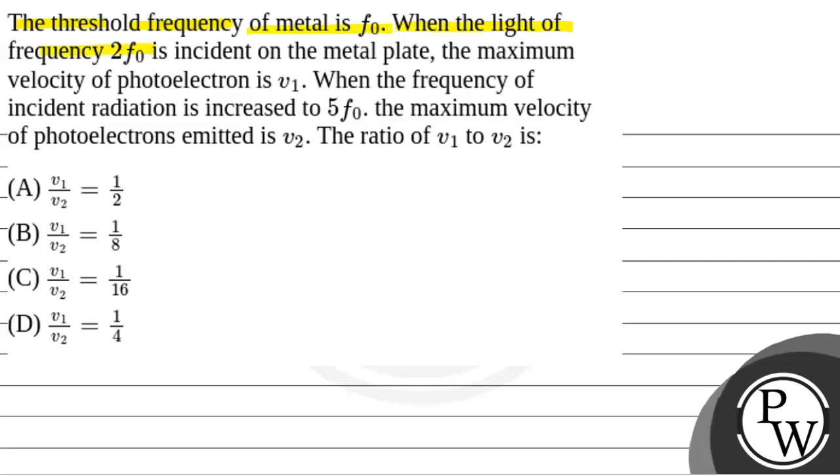When the light of frequency 2f0 is incident on the metal plate, the maximum velocity of photoelectron is v1. When the frequency of incident radiation is increased to 5f0, the maximum velocity of photoelectrons emitted is v2. The ratio of v1 to v2 is?